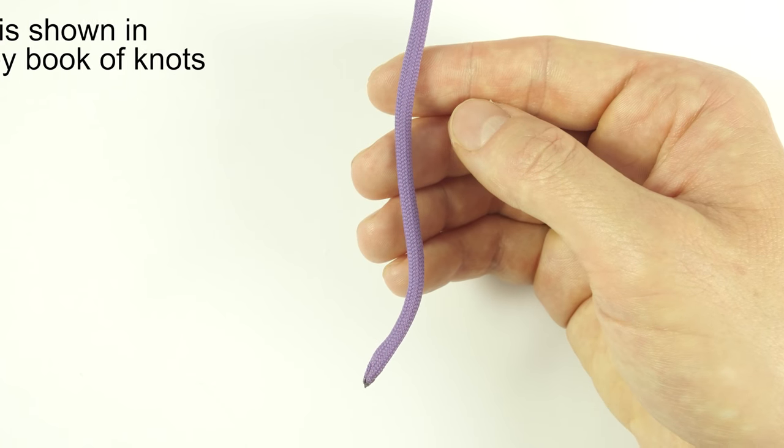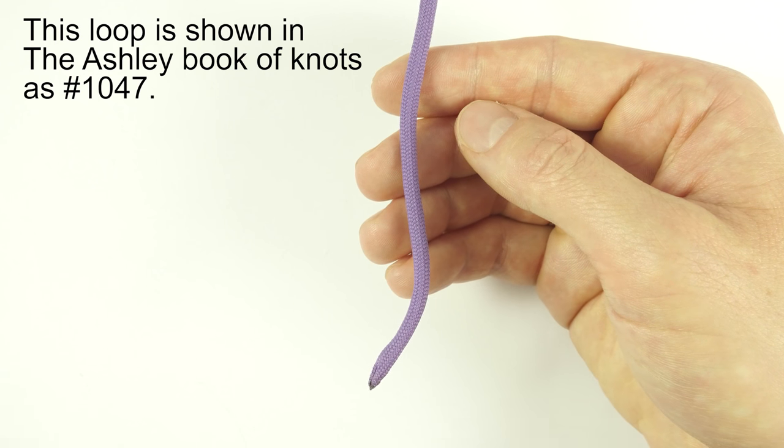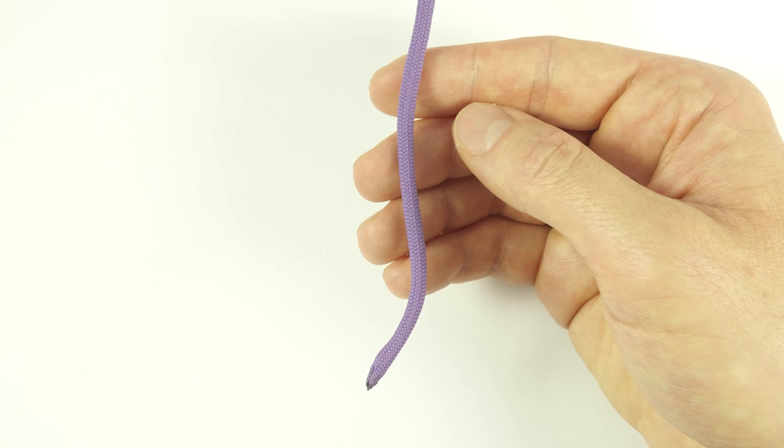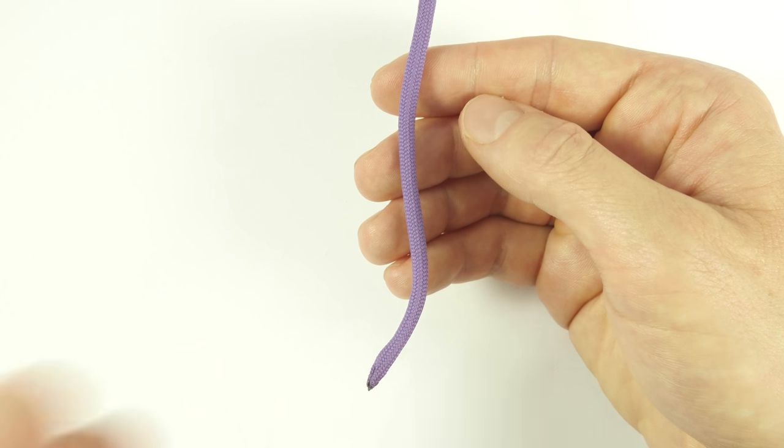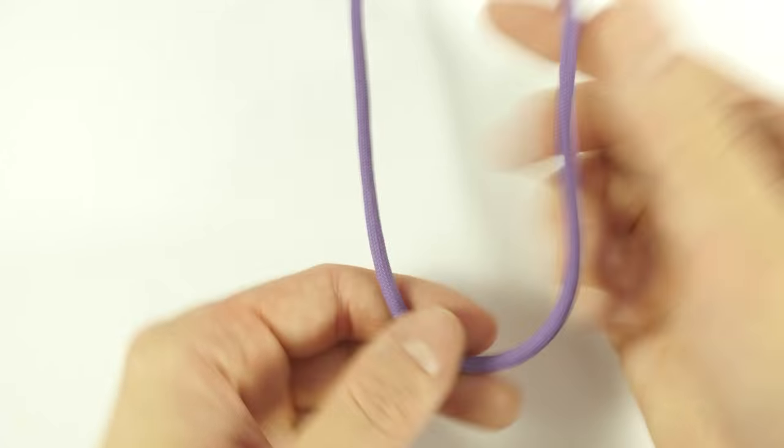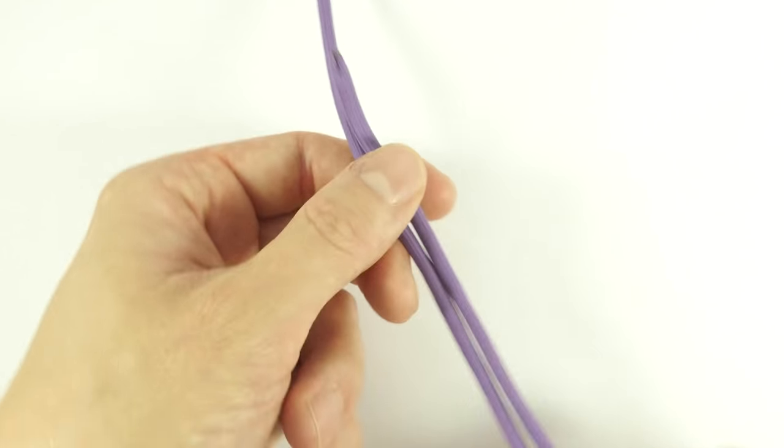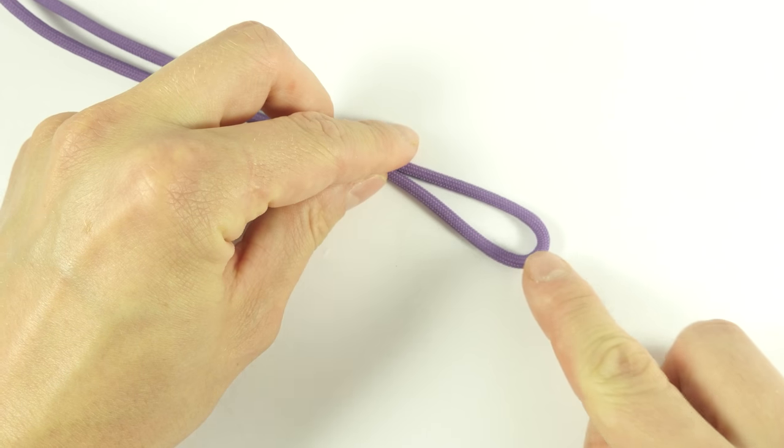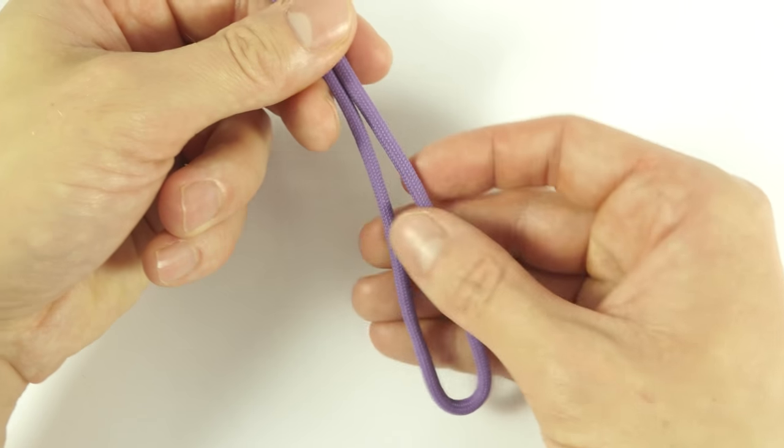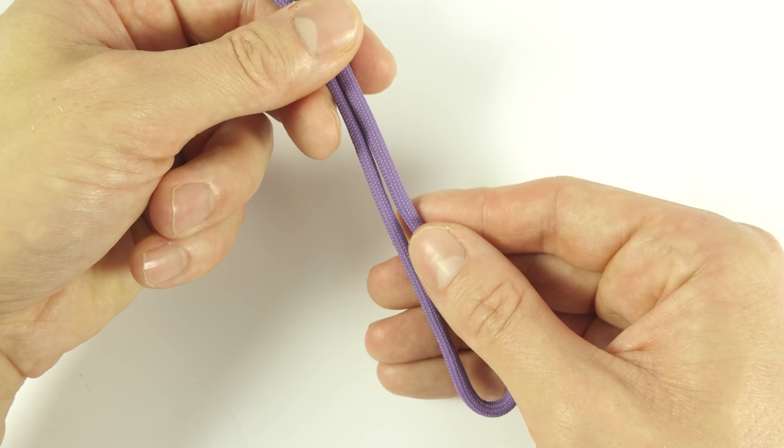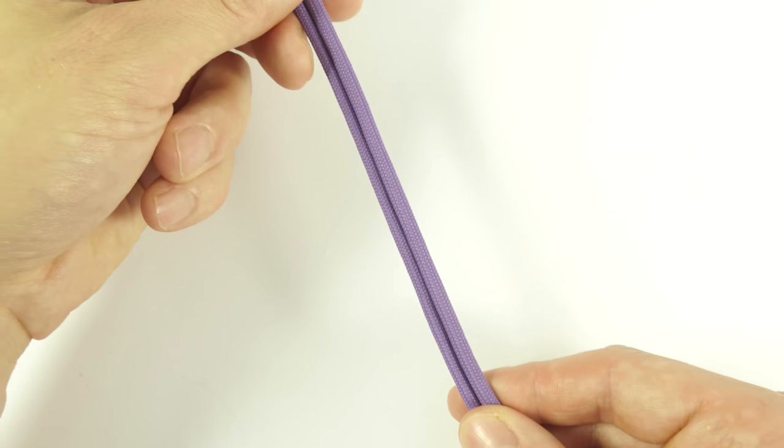There is another way of creating a loop using the figure 8 knot. This time we start off folding our end in order to create a bight. Then, using the bight, we're going to tie a figure 8 knot. So we start off creating a loop.